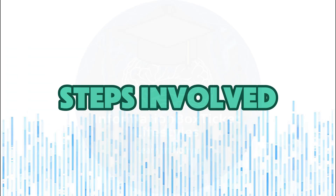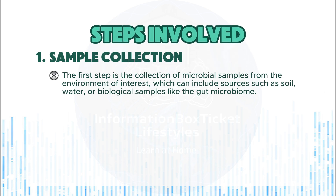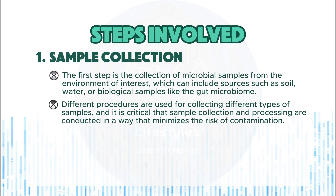Step 1: Sample collection. The first step is the collection of microbial samples from the environment of interest, which can include sources such as soil, water, or biological samples like the gut microbiome. Different procedures are used for collecting different types of samples, and it is critical that sample collection and processing are conducted in a way that minimizes the risk of contamination.